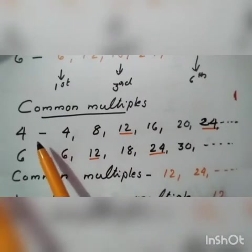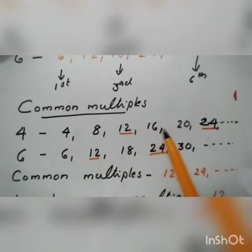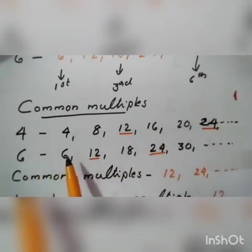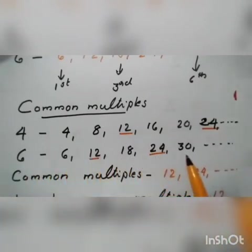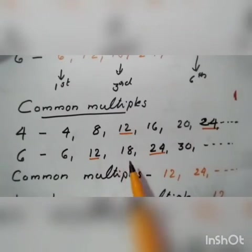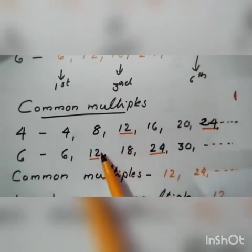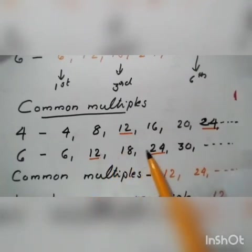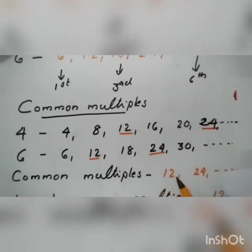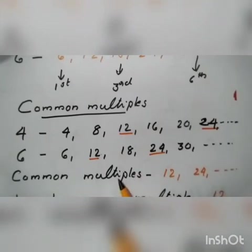Common multiples: the multiples of 4 are 4, 8, 12, 16, 20, 24, and so on. The multiples of 6 are 6, 12, 18, 24, 30, and so on. The common multiples: 12 is in both 4 and 6, and 24 is common. So the common multiples are 12, 24, 36, 48, and so on — these are the common multiples of 4 and 6.